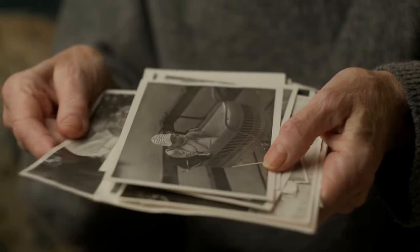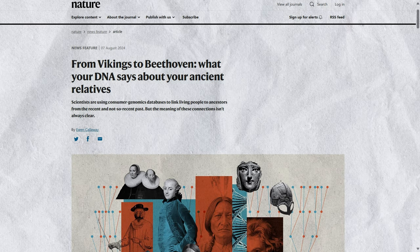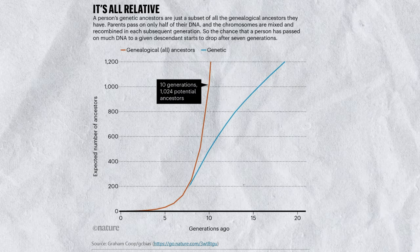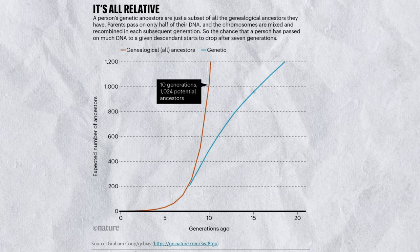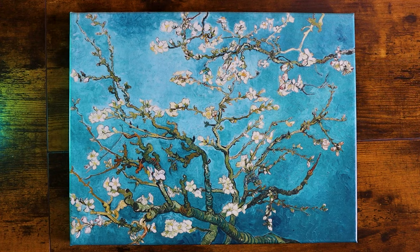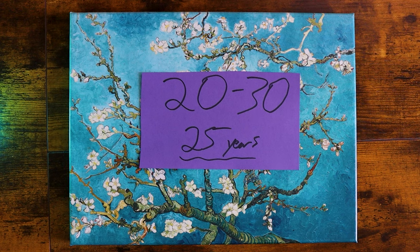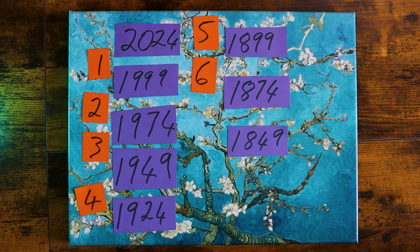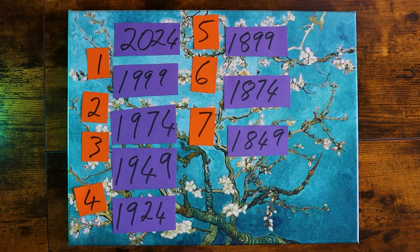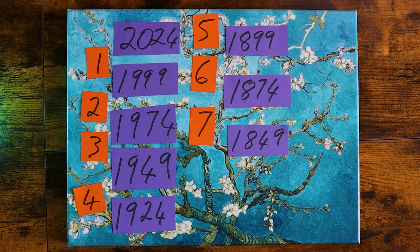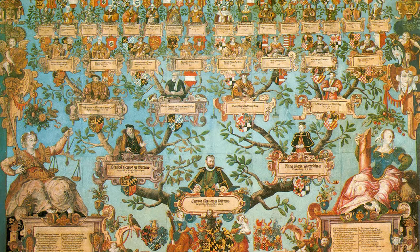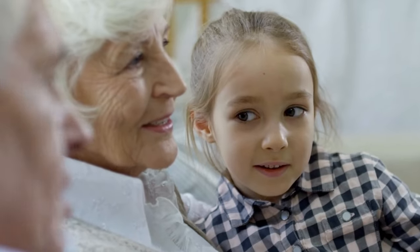But from how many previous generations back do you inherit DNA? As one interesting article in Nature notes, beyond 7 generations ago, the chance that much DNA is in living descendants starts to fall, with your genetic ancestry diverging drastically from your genealogical ancestry at this point. A generation is usually anywhere between 20 and 30 years. If we say a generation is 25 years and trace it back from 2024, then 7 generations back works out at 175 years, or 1849. That doesn't mean you don't inherit any DNA from people before 7 generations ago — there is variation due to random inheritance and other factors — but the percentage becomes smaller and smaller the further you go back, until it eventually reaches zero.